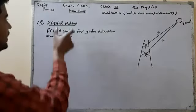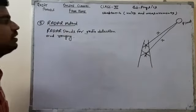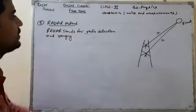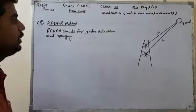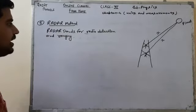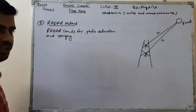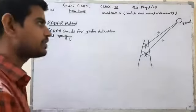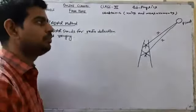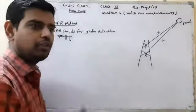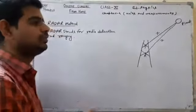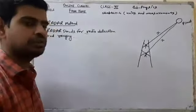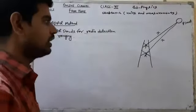This method is the radar method. Here radar stands for Radio Detection And Ranging. It is used to find the distance of planets or the moon from the surface of the earth.